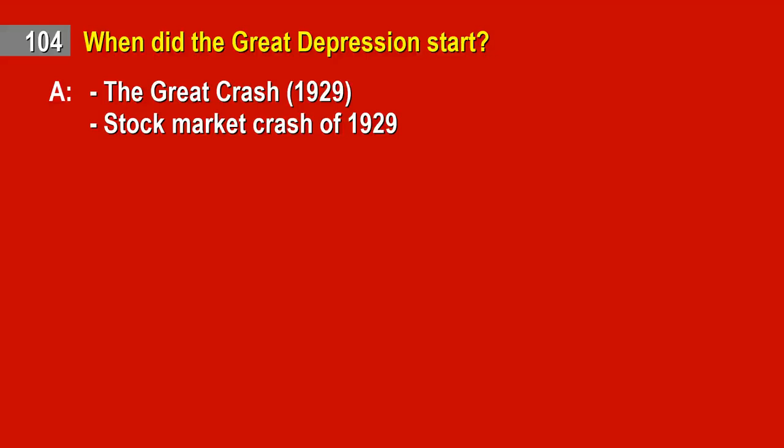Question 104. When did the Great Depression start? Answer: The Great Crash, 1929. Stock market crash of 1929.